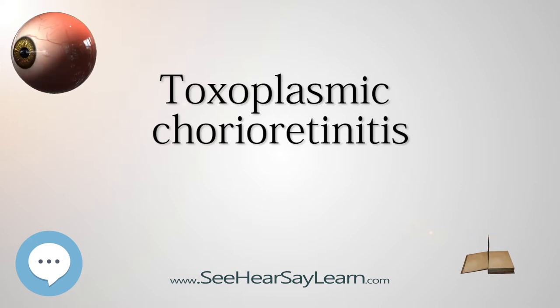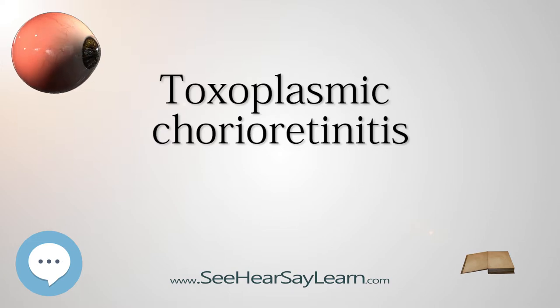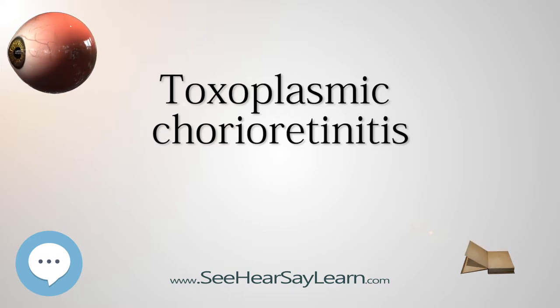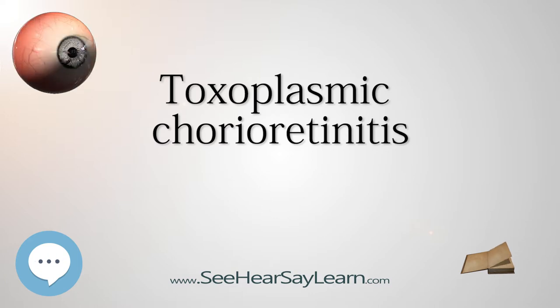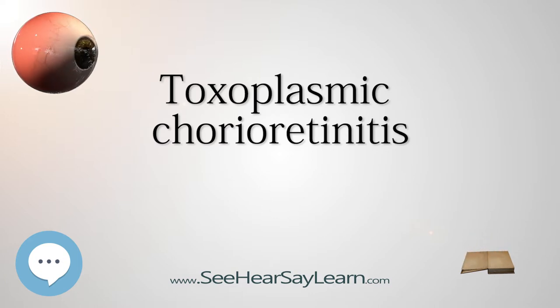Antibodies Against Toxoplasma — IgG: IgG antibodies appear within the first two weeks after infection, typically remain detectable for life, albeit at low levels, and may cross the placenta.